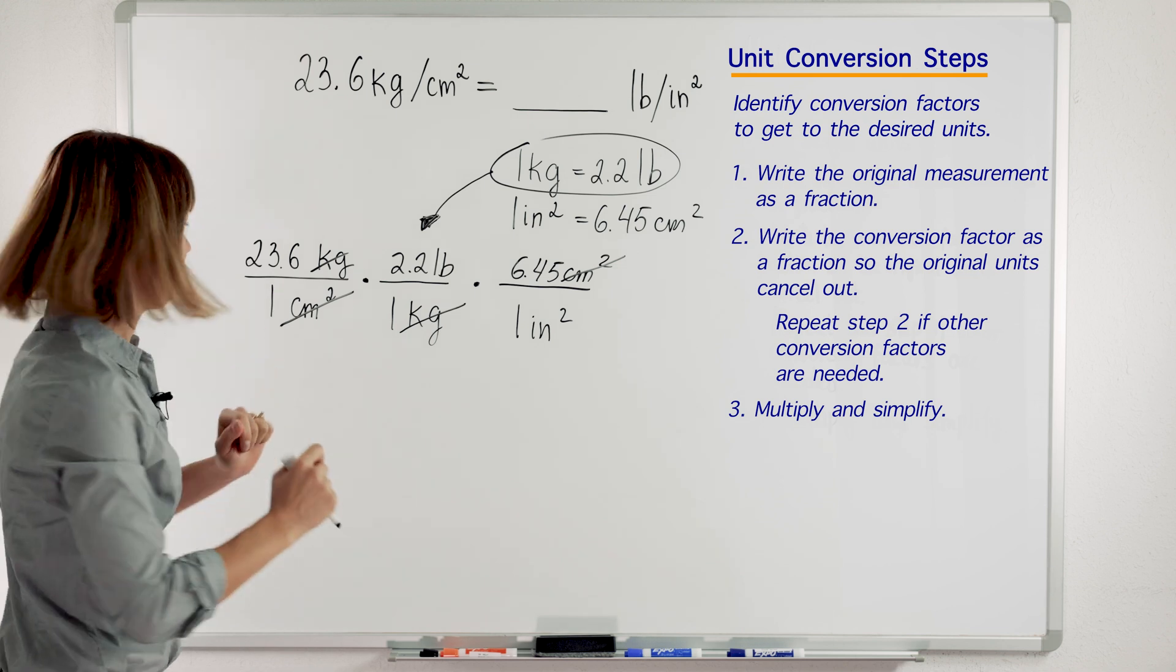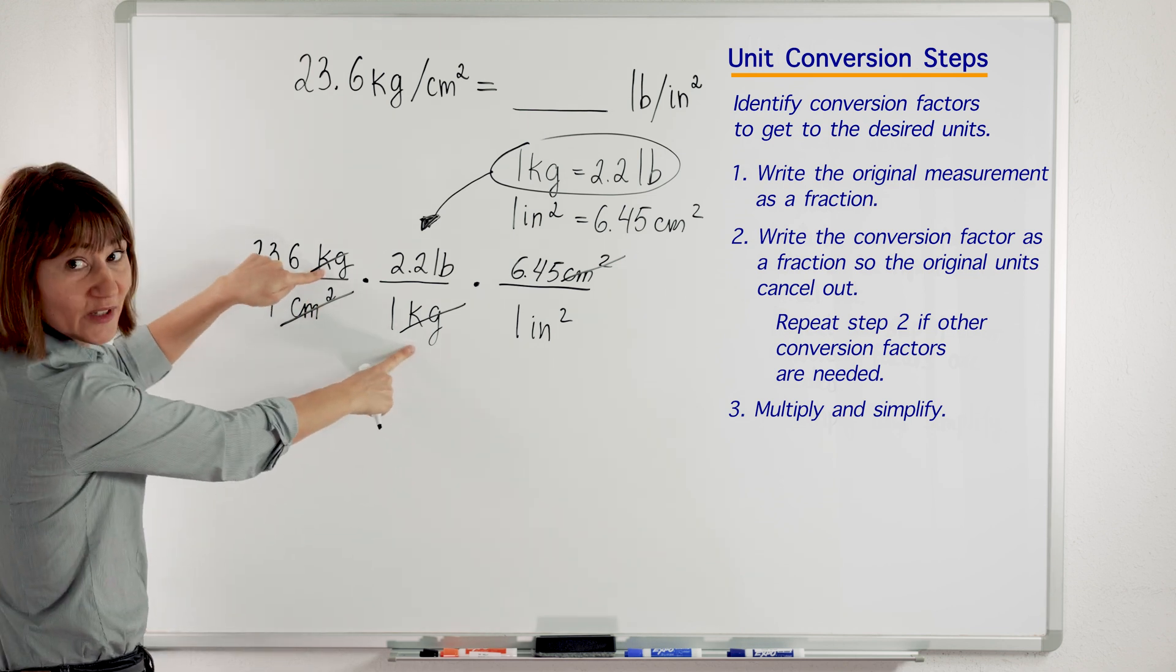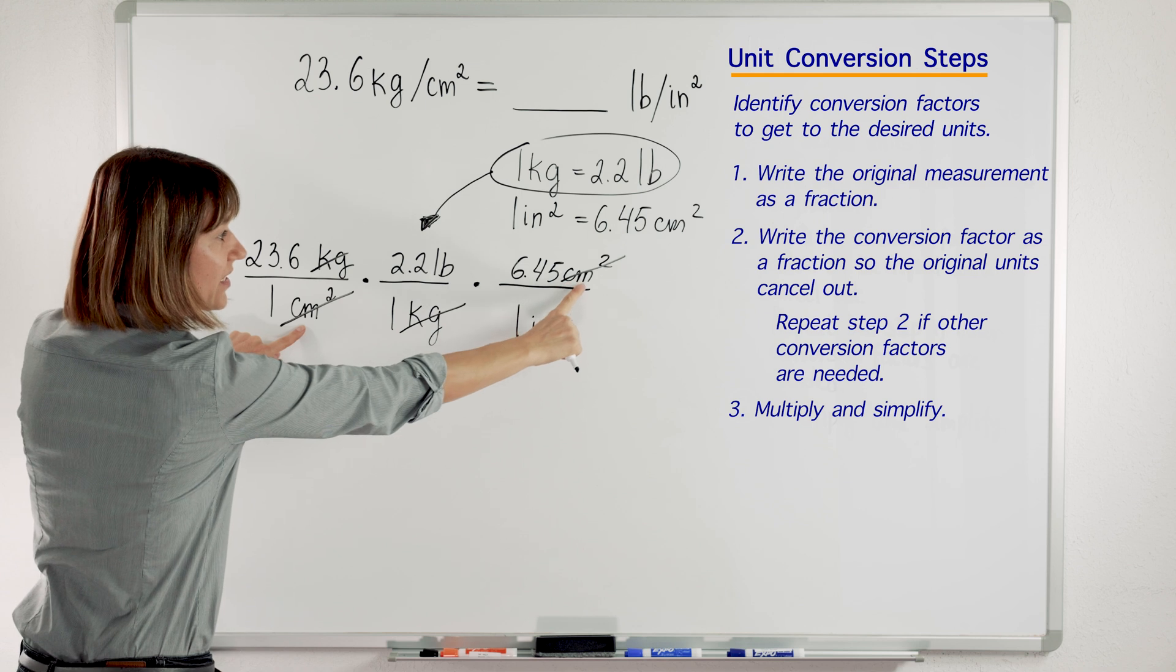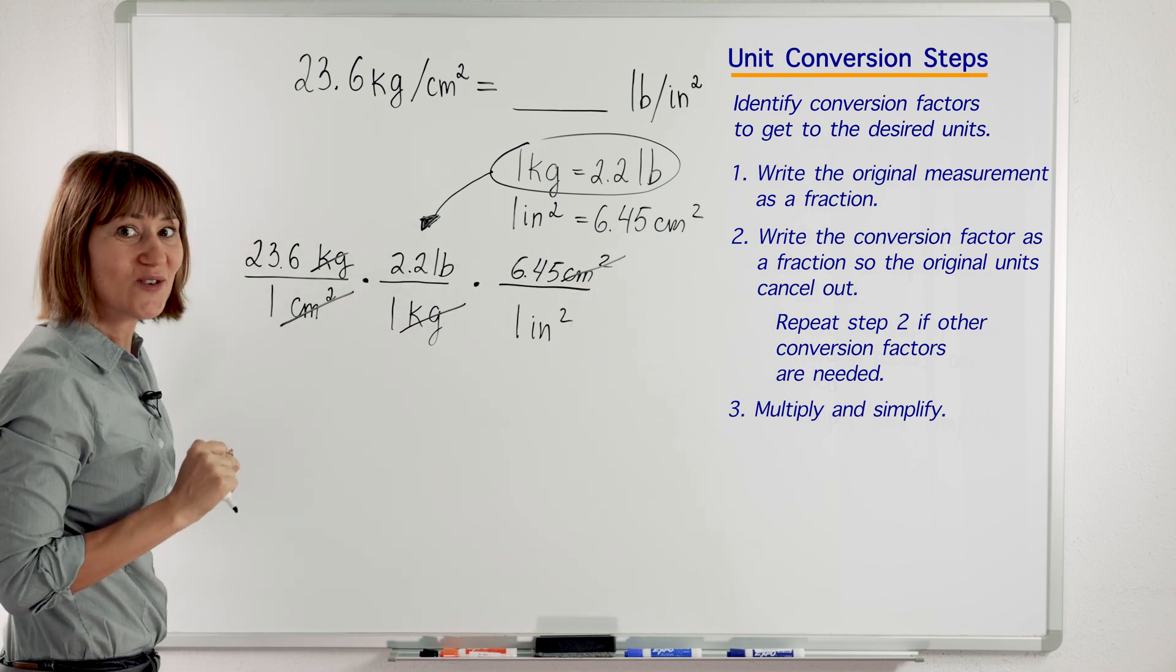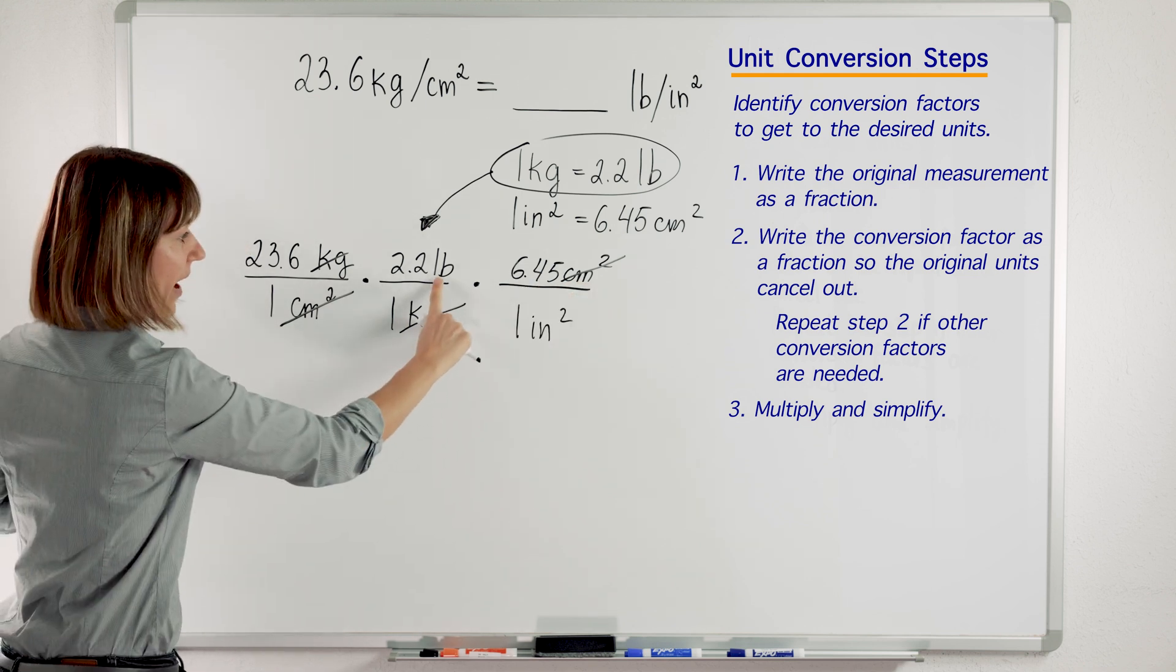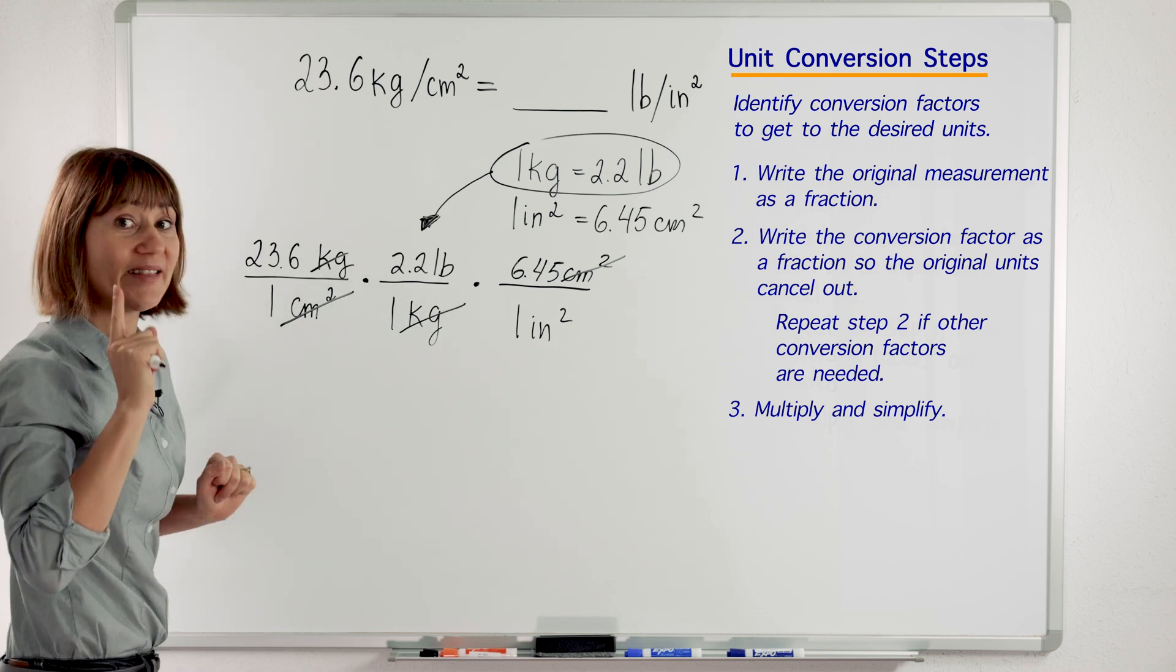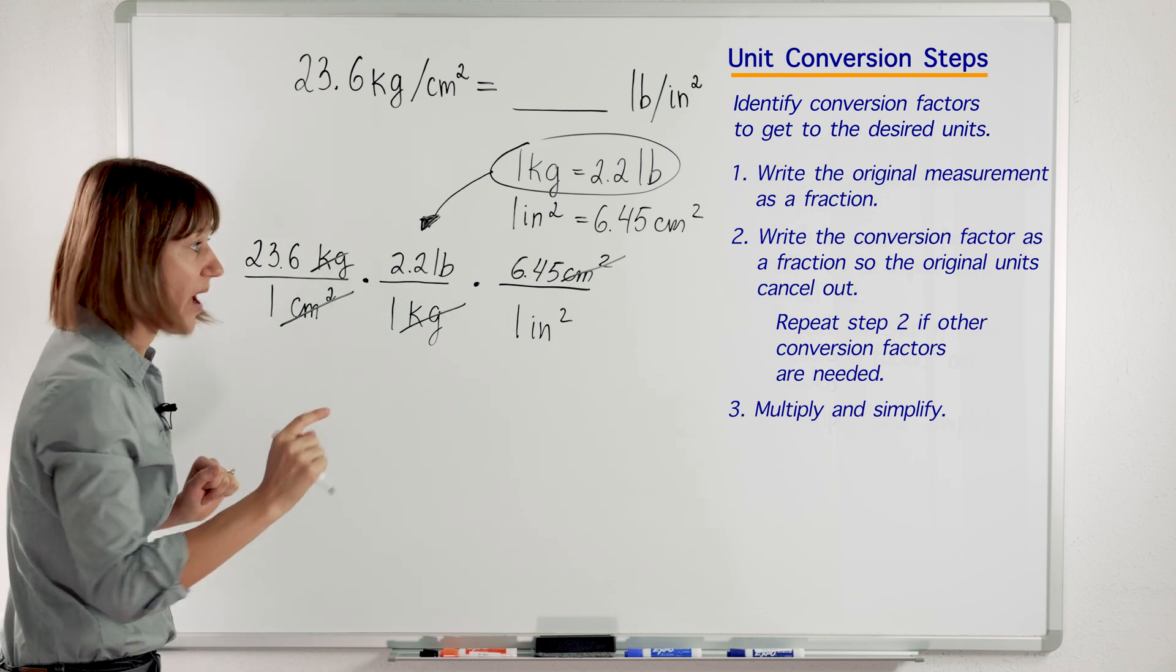Now let's look. We got rid of kilograms. Yes, very good. We got rid of centimeters squared. Very good. What are we left with? Pounds per inch squared. And now we can do the math.